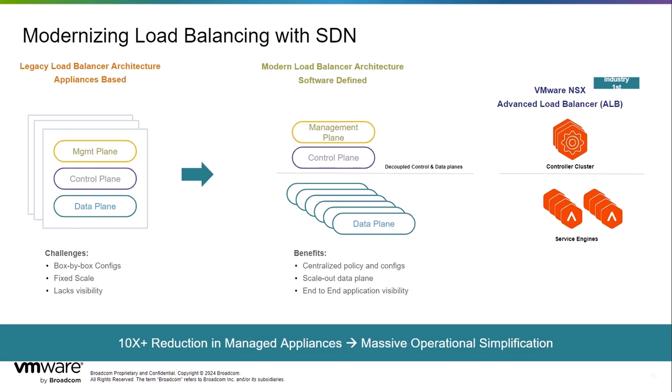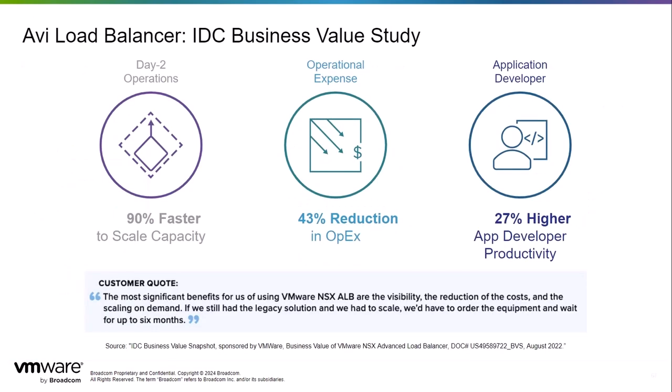This helps lead to a 10x reduction in managed appliances. Here we see an IDC business value study on Avi load balancer for day two operations. There is a 90% scale to capacity for operational expenses, a 43% reduction in OpEx, and for application developers there is 27% higher productivity.